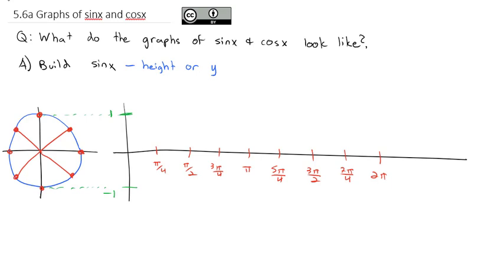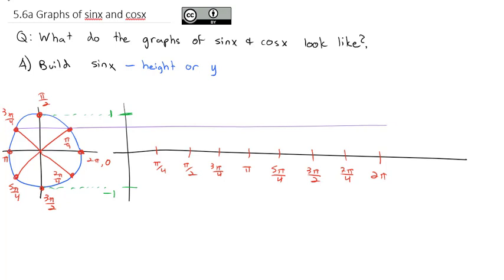Let's label this unit circle as well: pi over 4, pi over 2, 3 pi over 4, pi, 5 pi over 4, 3 pi over 2, 7 pi over 4, and finally 2 pi, which is also 0. Notice that 3 pi over 4 and pi over 4 have the same y-coordinate — the same height — so they'll have the same height on the graph. Similarly, 5 pi over 4 and 7 pi over 4 are just below the x-axis, so they're low points.